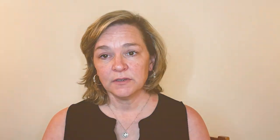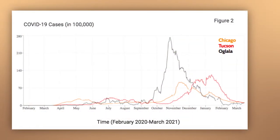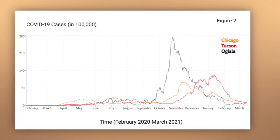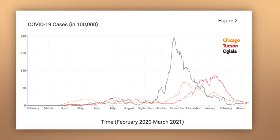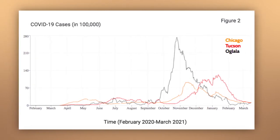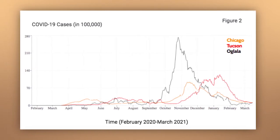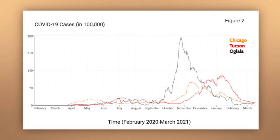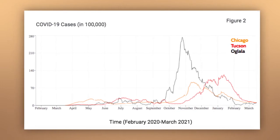In Lesson 5, students use simulation data and compare it to the data from real communities. The data from the communities is from March 2021 when the unit was released. You can update this community data and the timelines for the locations using COVID Act Now, found online at www.covidactnow.org. You can also use local COVID restrictions and updates websites.